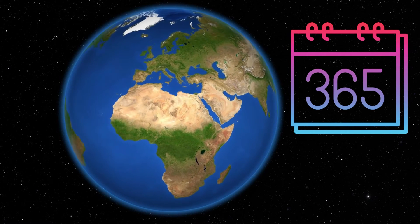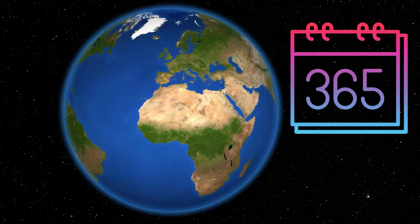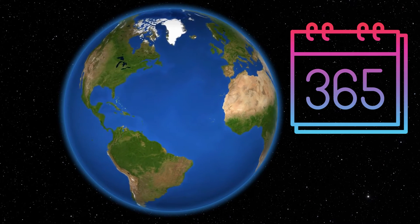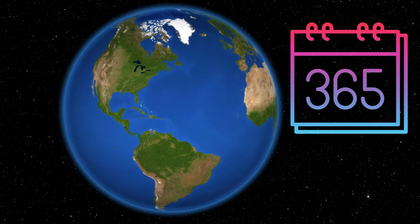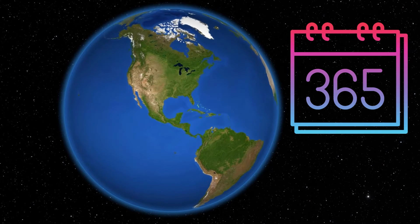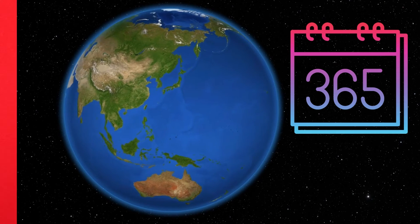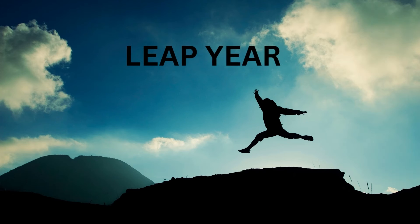However, every four years, one day is added to February. Instead of 28 days, February has 29 days. When February has 29 days, we have a leap year. A leap year has 366 days.